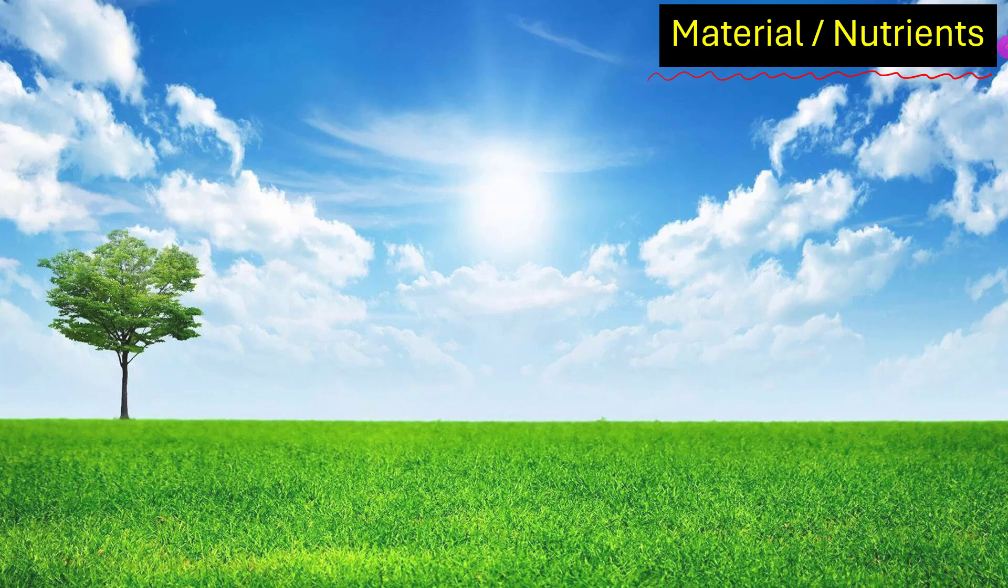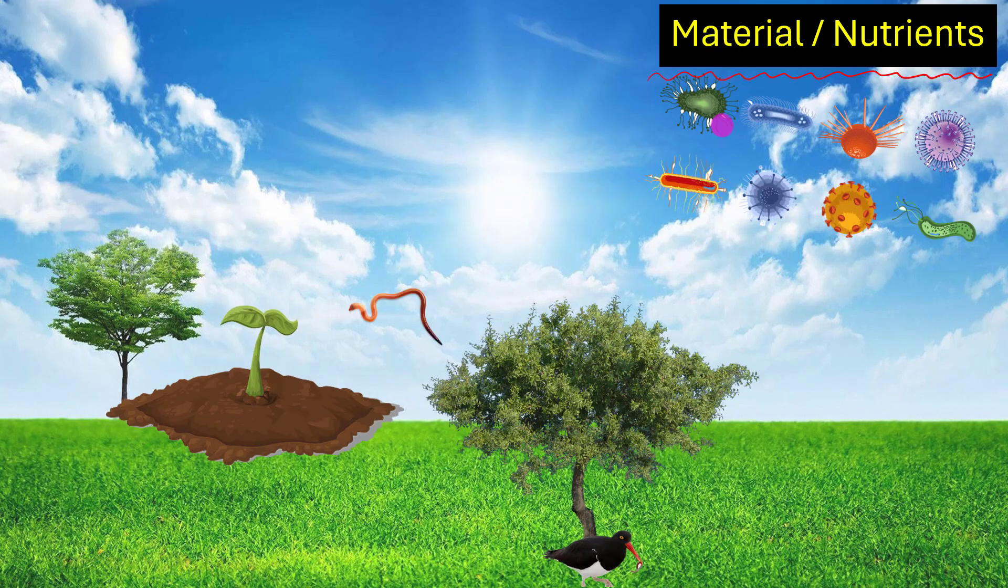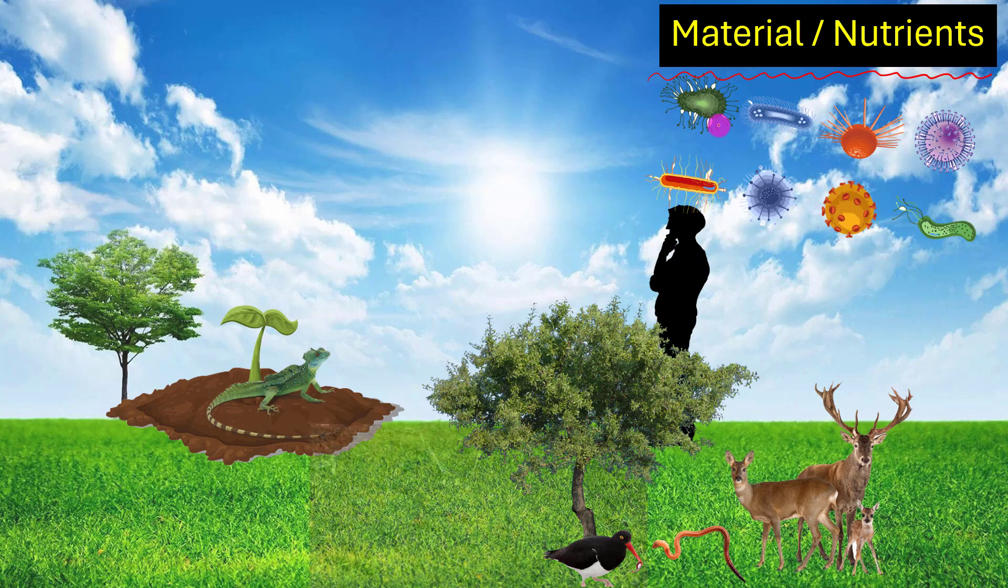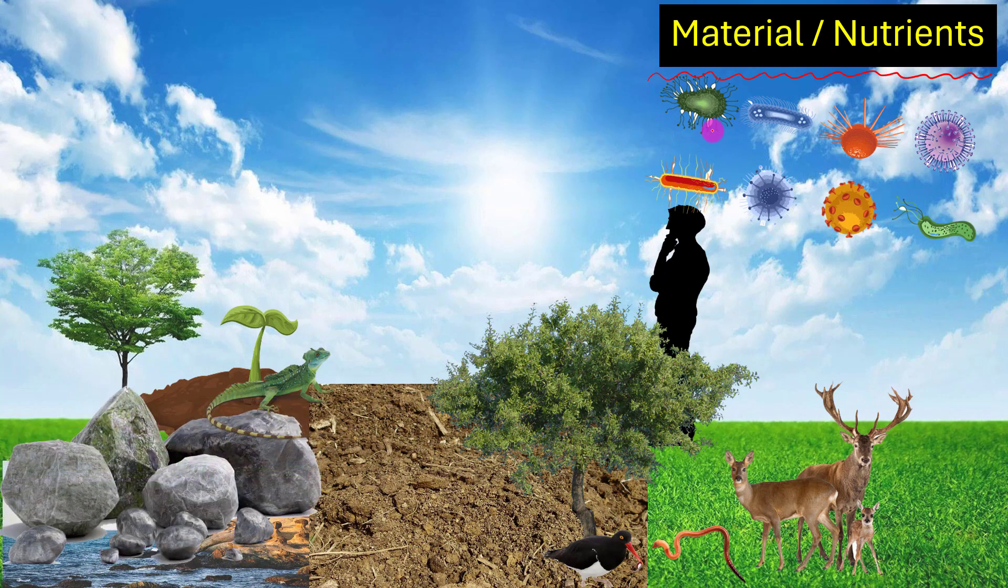All organisms, from viruses, bacteria, plants, and animals, to man, are composed of matter. Matter is made of elements. Organisms require about 40 elements for their growth and life processes. The masses of all organisms are, therefore, made of matter.